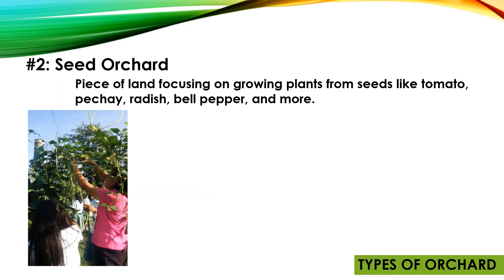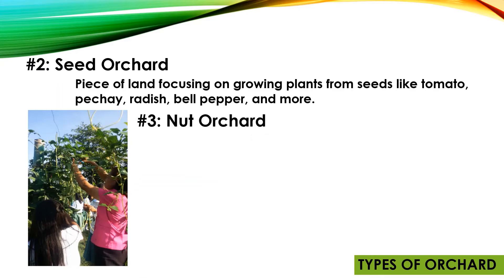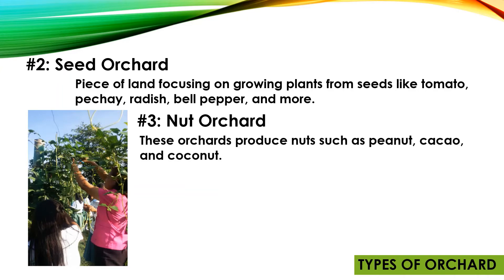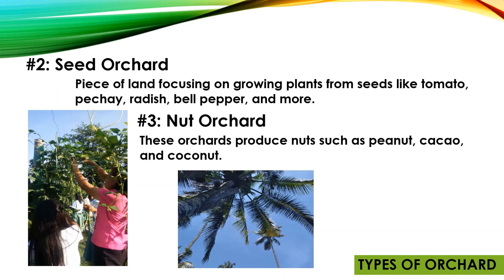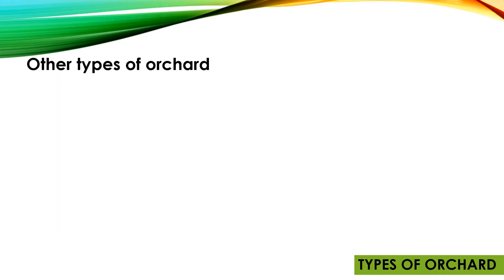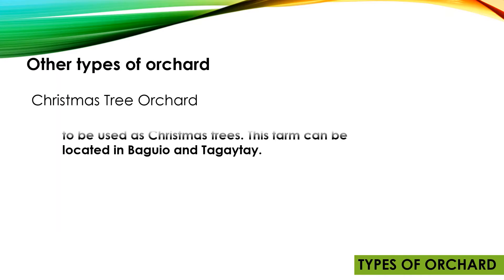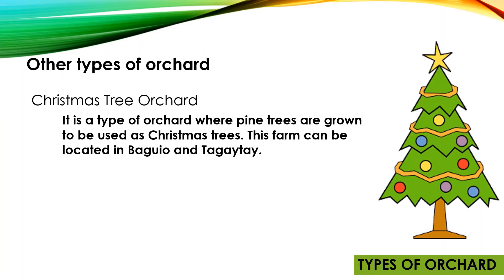Other seed orchard crops include bok choy, radish, bell pepper, and more. Number three: Nut Orchard. A nut orchard is an orchard that gives us delicious nuts, cacao, and coconut. There are also other types of orchard — for example, the Christmas Tree Orchard, where pine trees are grown to be used as Christmas trees.